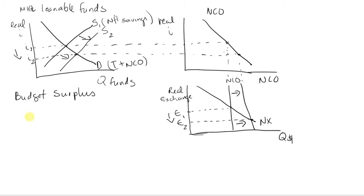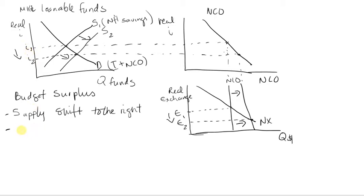So again, with a budget surplus, the first thing that happens is that the supply of loanable funds will shift to the right. That is going to decrease the real interest rate, and that is then going to increase net capital outflow.